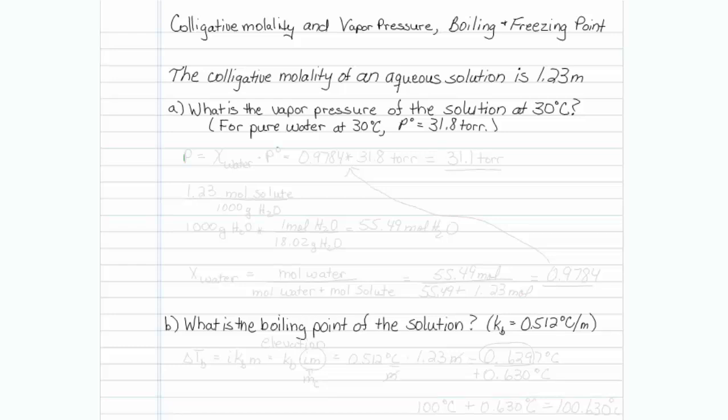We're given the colligative molality of an aqueous solution as 1.23 molal. Our first question asks, what is the vapor pressure of the solution at 30 degrees Celsius? And we're given the information for pure water at 30 degrees Celsius. The vapor pressure is 31.8 torr.